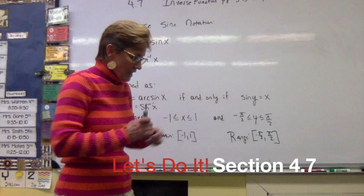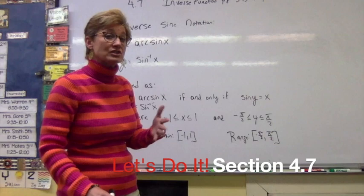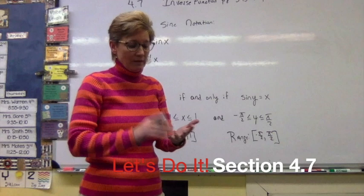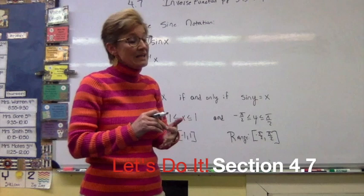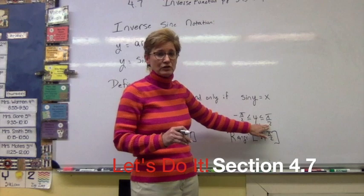We're going to be asked to determine the exact value of the inverse function of sine. Anytime we're asked to find the exact value for the inverse function of sine, we know that is going to refer to our special angles: zero, 30 degrees which is pi over six, 45 degrees which is pi over four, 60 degrees which is pi over three, and 90 degrees which is pi over two. Those fall within y to pi over two — our angle measurements.